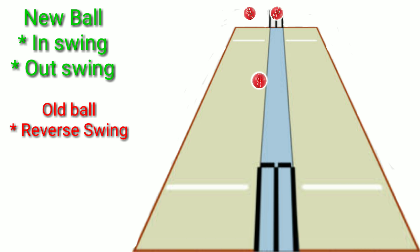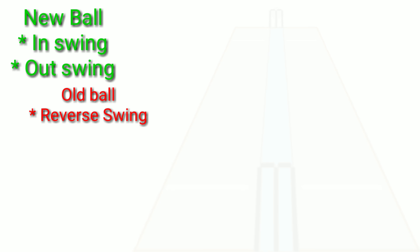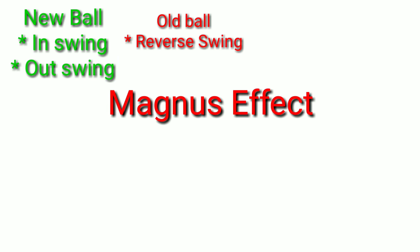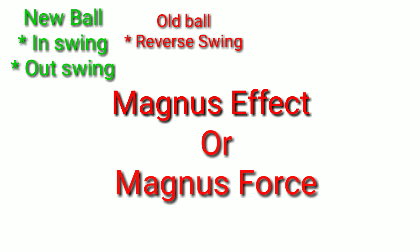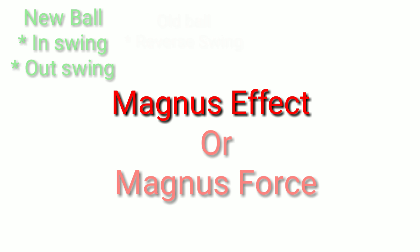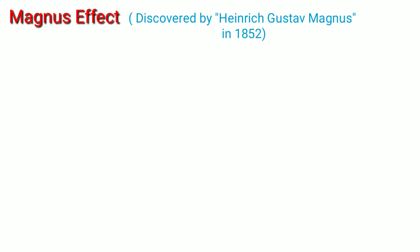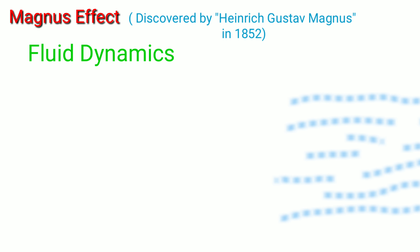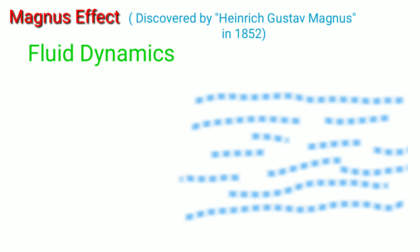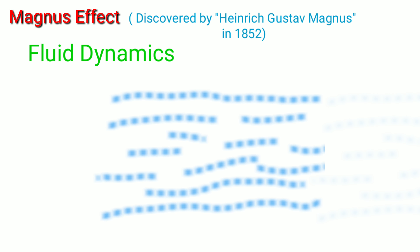In a cricket ball, there are two surfaces — surface A and surface B. The middle part is called the seam position. When the ball is new, it can swing in two ways: either in-swing or out-swing, depending on the seam position.